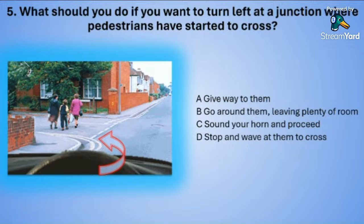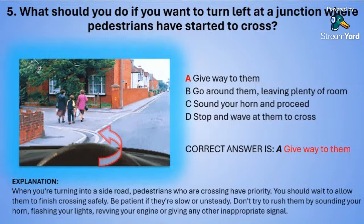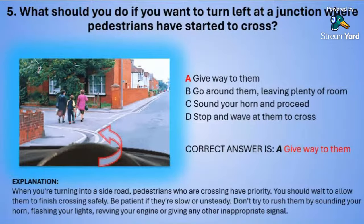The correct answer is A — give way to them. When you are turning into a side road, pedestrians who are crossing have priority. You need to wait to allow them to finish crossing safely. Be patient if the pedestrians are slow or unsteady. Don't try to rush them by sounding your horn, flashing your lights, revving your engine or giving any other inappropriate signal.